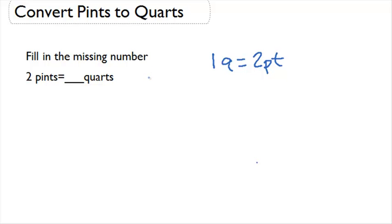Now this is a pretty easy one, since our formula already told us that one quart is equal to two pints. So two pints must be equal to one quart.